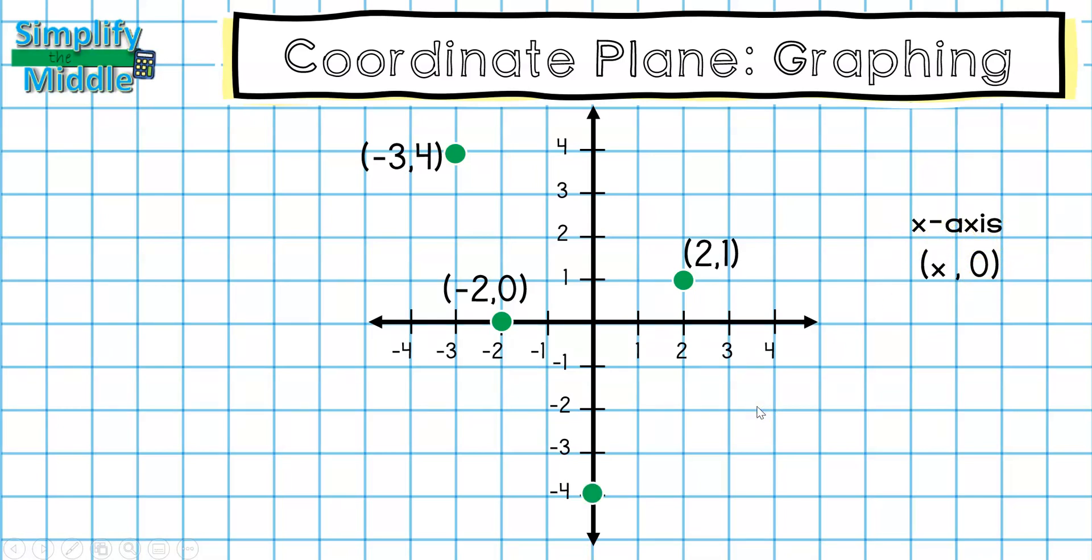Last example. I'm going to start at my origin here and there's nowhere to go left or right because my point is directly below, which means that my x-coordinate this time is 0. In my y-coordinate, I'm traveling down 4, so that's going to be 0, negative 4. And anytime that you see a 0 as your x-coordinate, you know that you're on the y-axis.